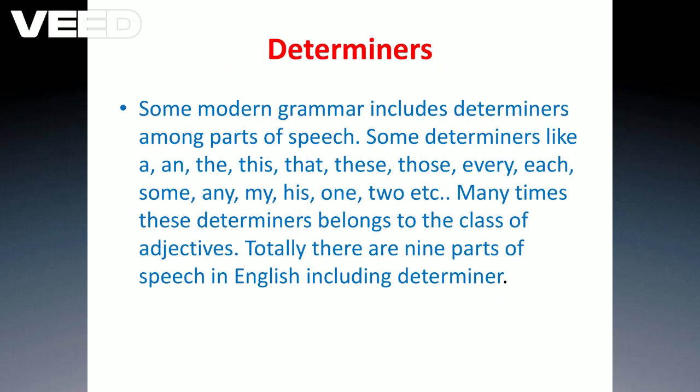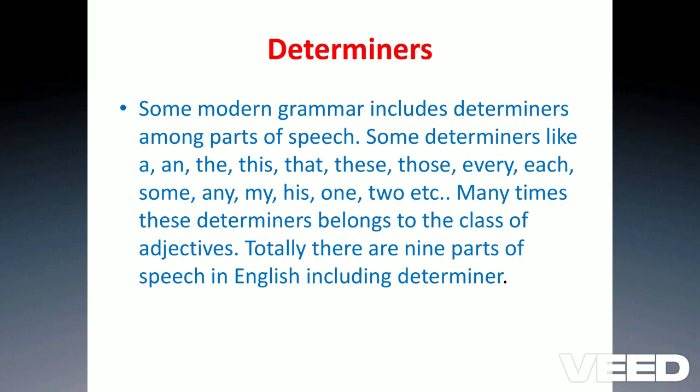Determiners: some modern grammar includes determiners among parts of speech. Some determiners include: a, an, the, this, that, these, those, every, each, some, any, my, is, one, two, etc. Many times, these determiners belong to the class of adjectives.